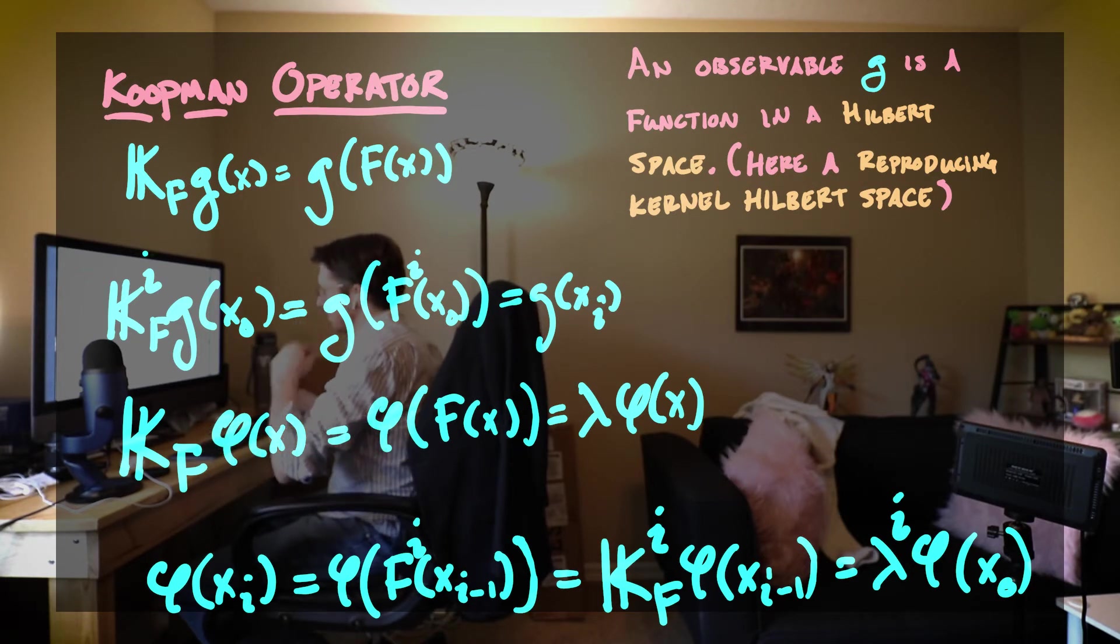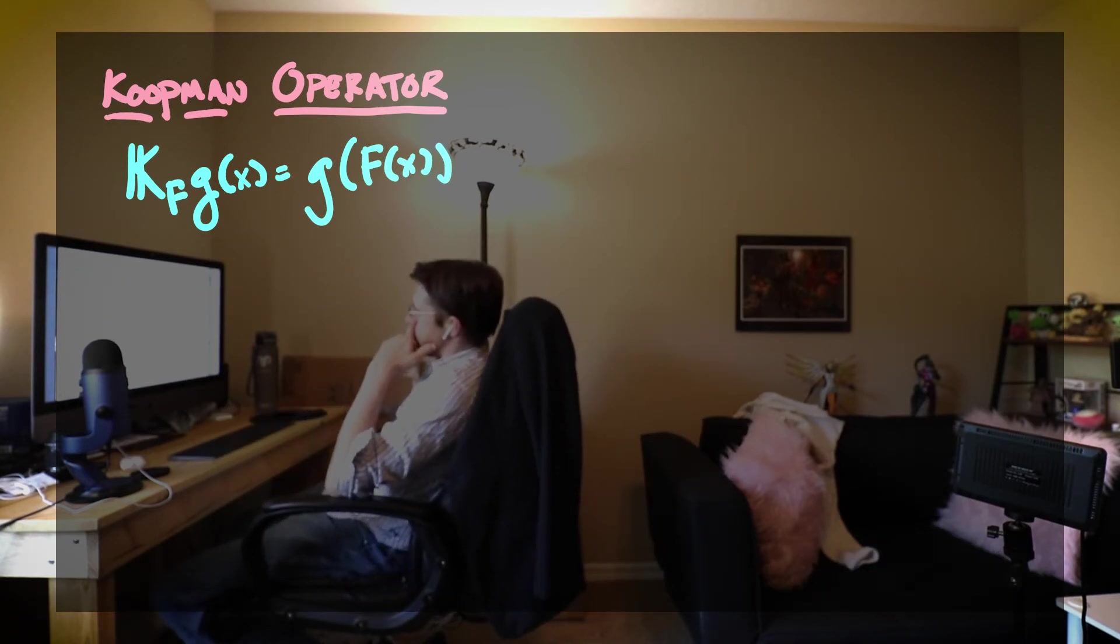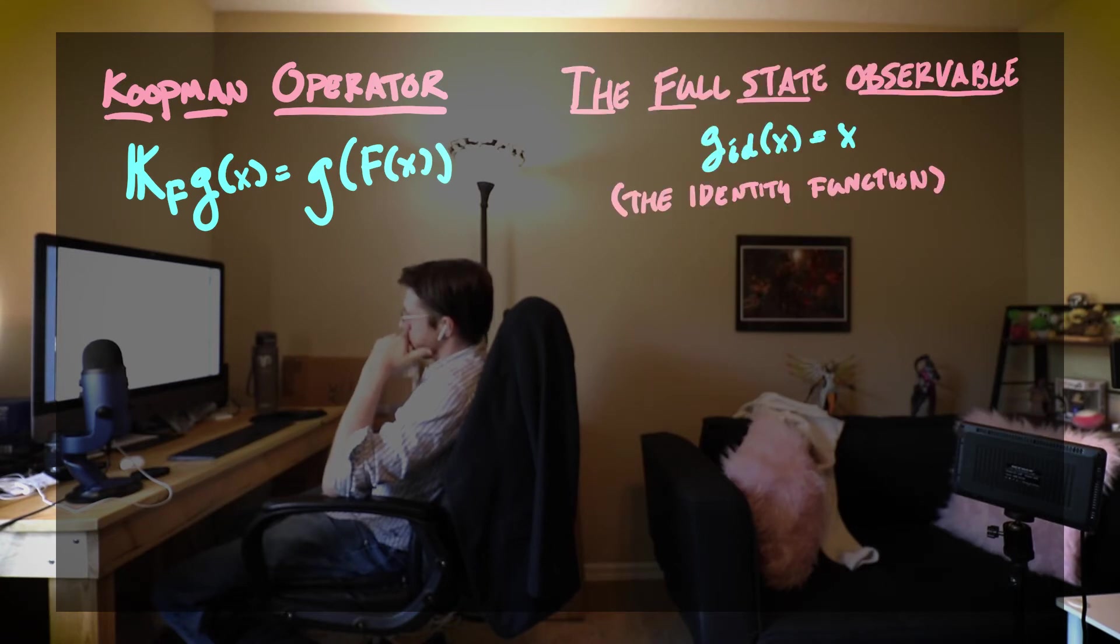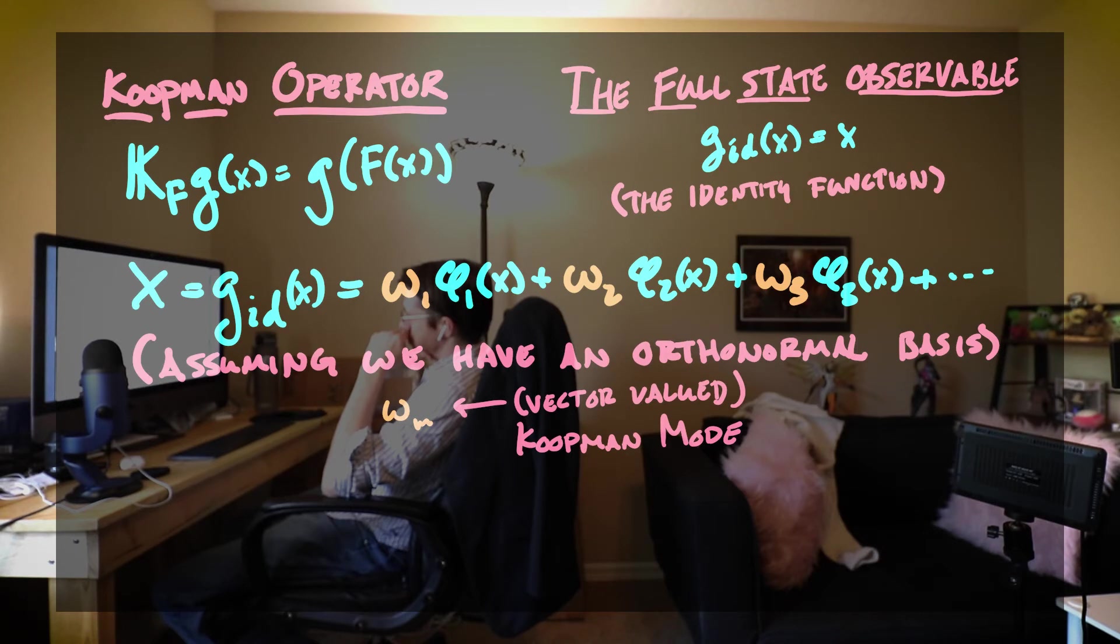The final step in getting to our representation of our time series through this Koopman operator comes by taking a look at a special observable called the full state observable. This is the observable where if you put x in there you get x back. And so it's just the identity function.